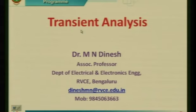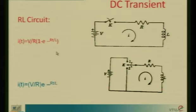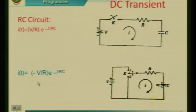In the last class we went through DC transients with initial conditions and took up two RL series circuits. We got expressions for I(t) as V/R × (1 - e^(-R/L × t)) and V/R × e^(-R/L × t), because the current dies down to zero after the switch is moved to position 2. We also went through two RC circuits with expressions I(t) = V/R × e^(-t/RC), and in the second case minus V/R × e^(-t/RC).